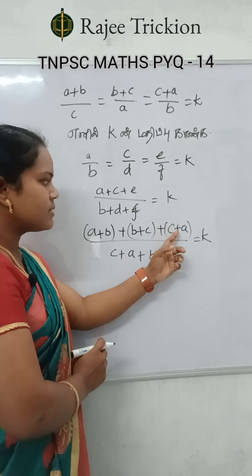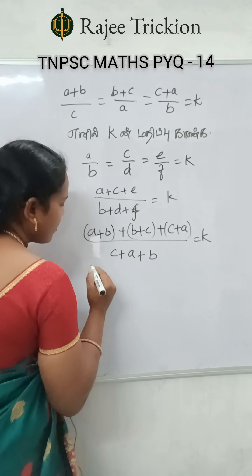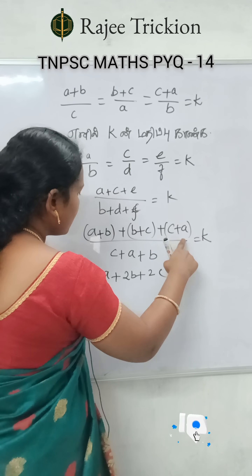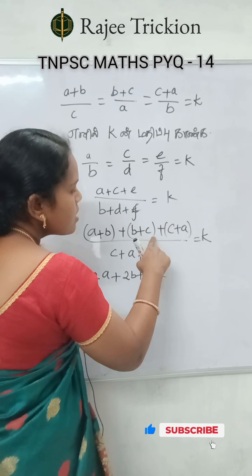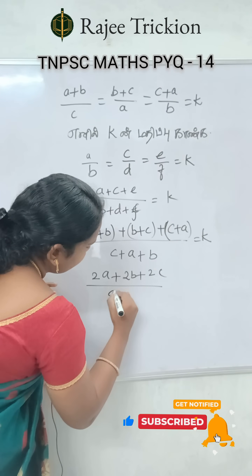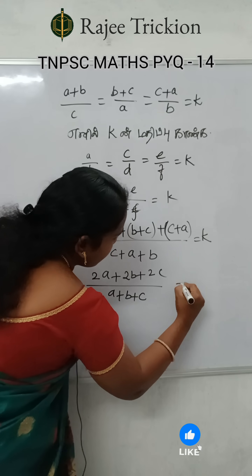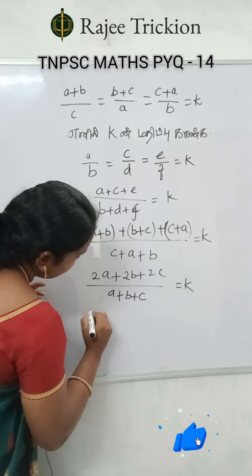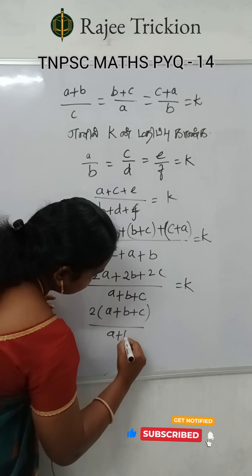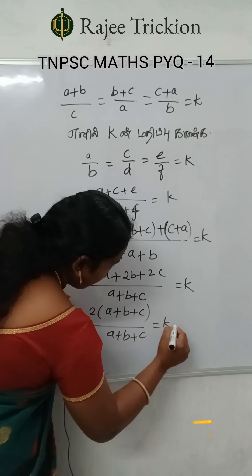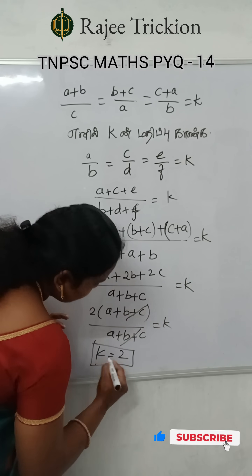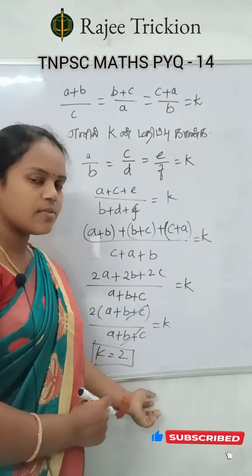So A plus B plus C is the numerator and A plus B plus C is also the denominator. So A plus B plus B plus C is equal to A plus C plus A plus C. If you cancel it, then you can get K equal to 2. So the answer is K equal to 2.